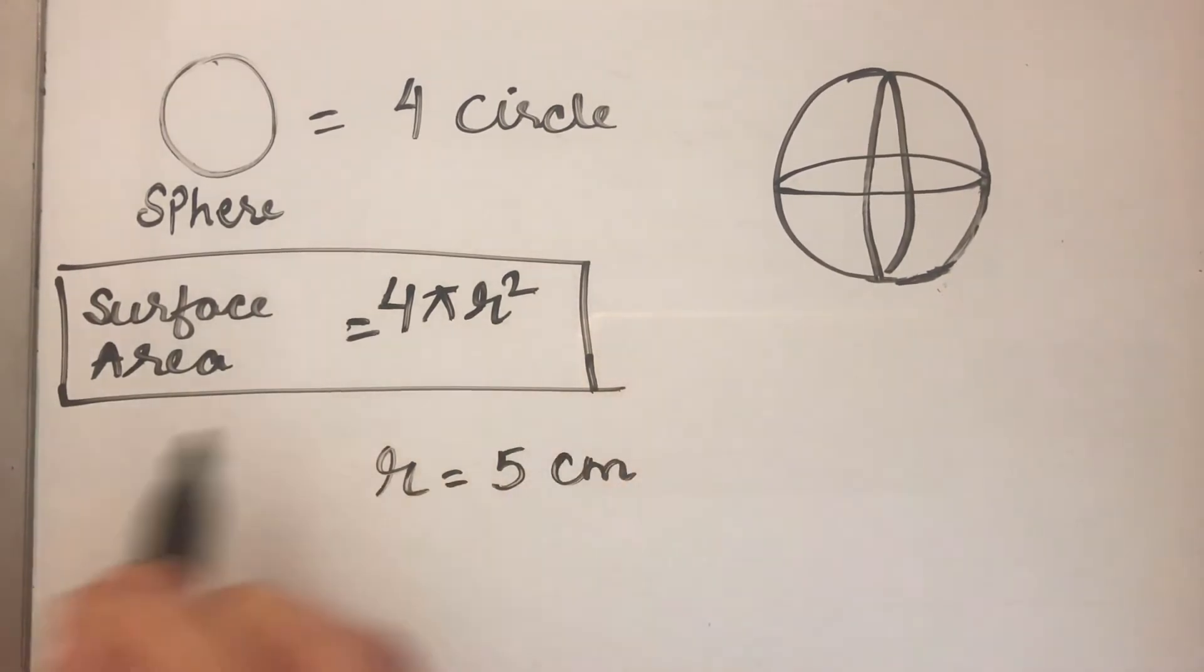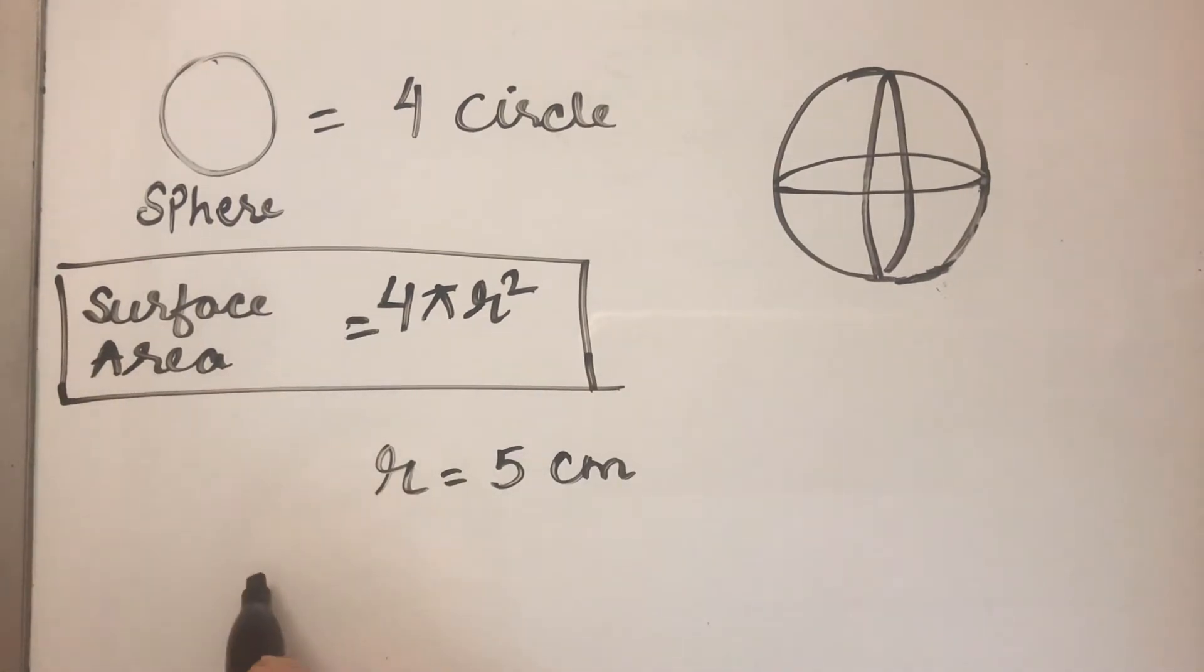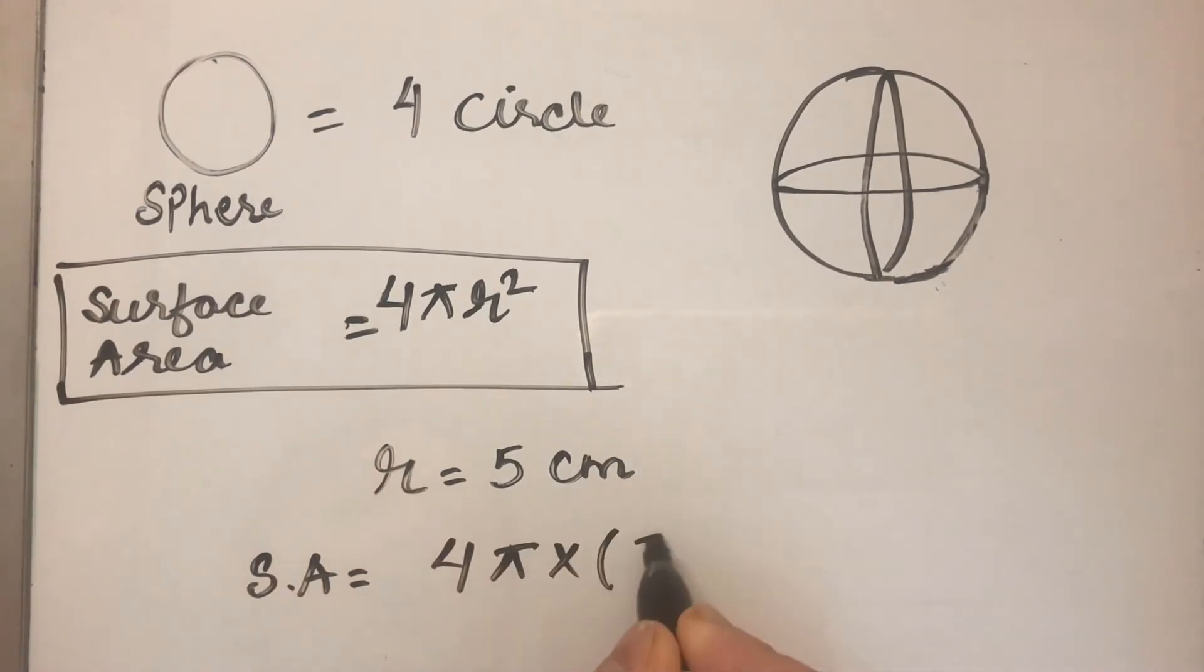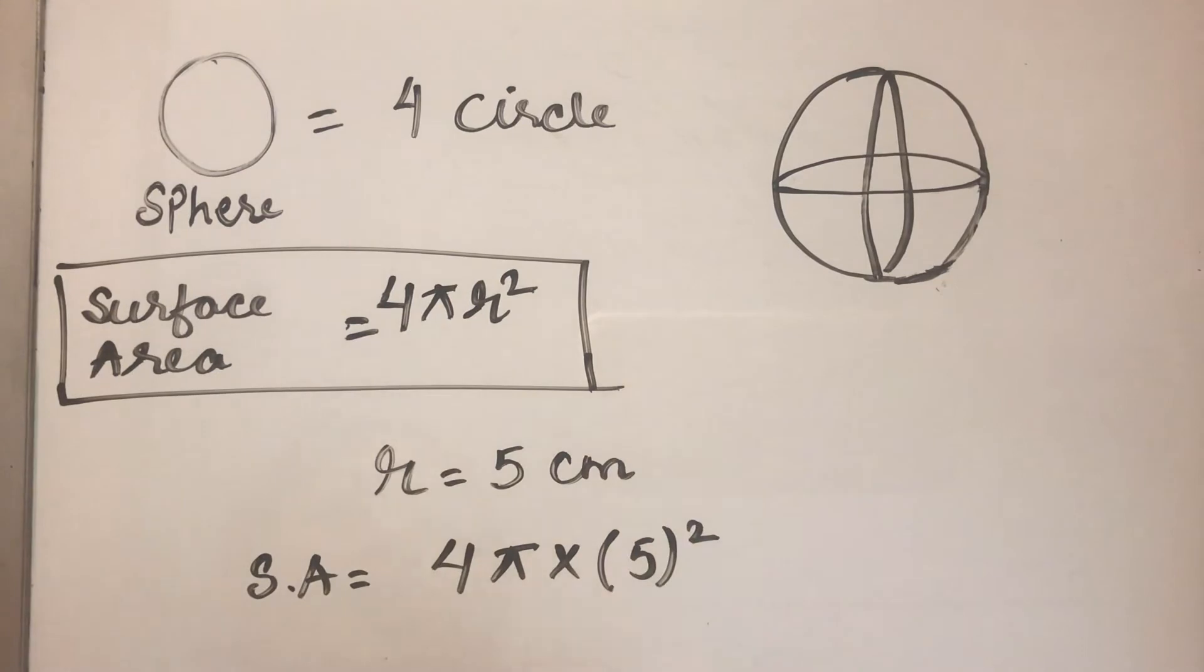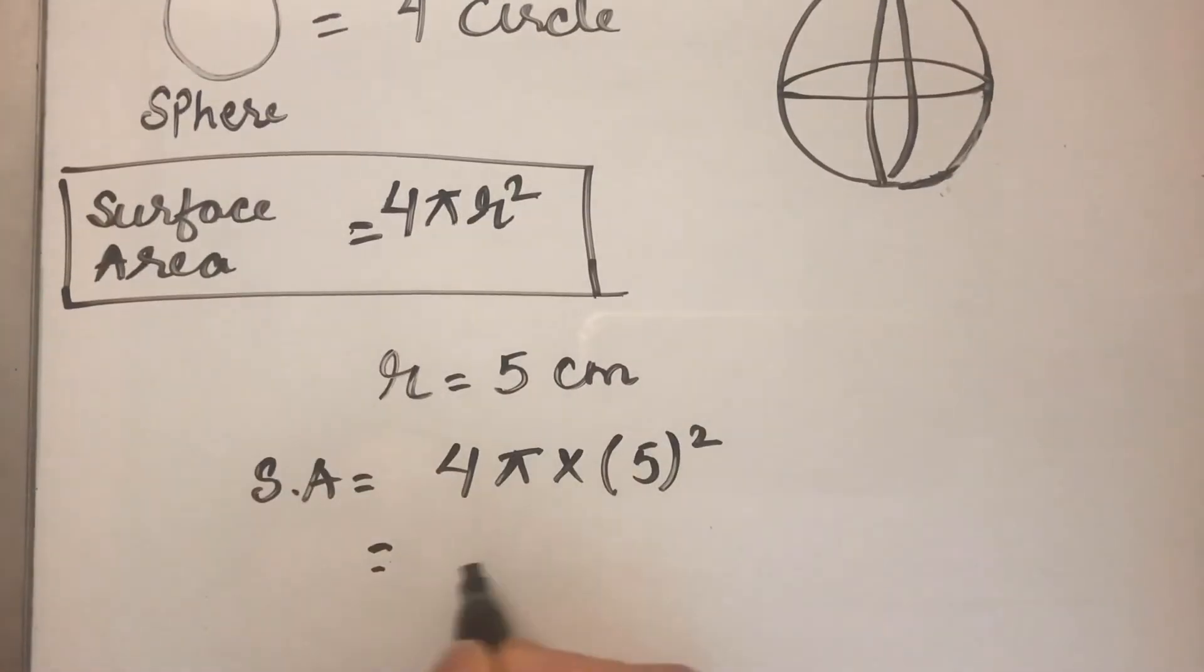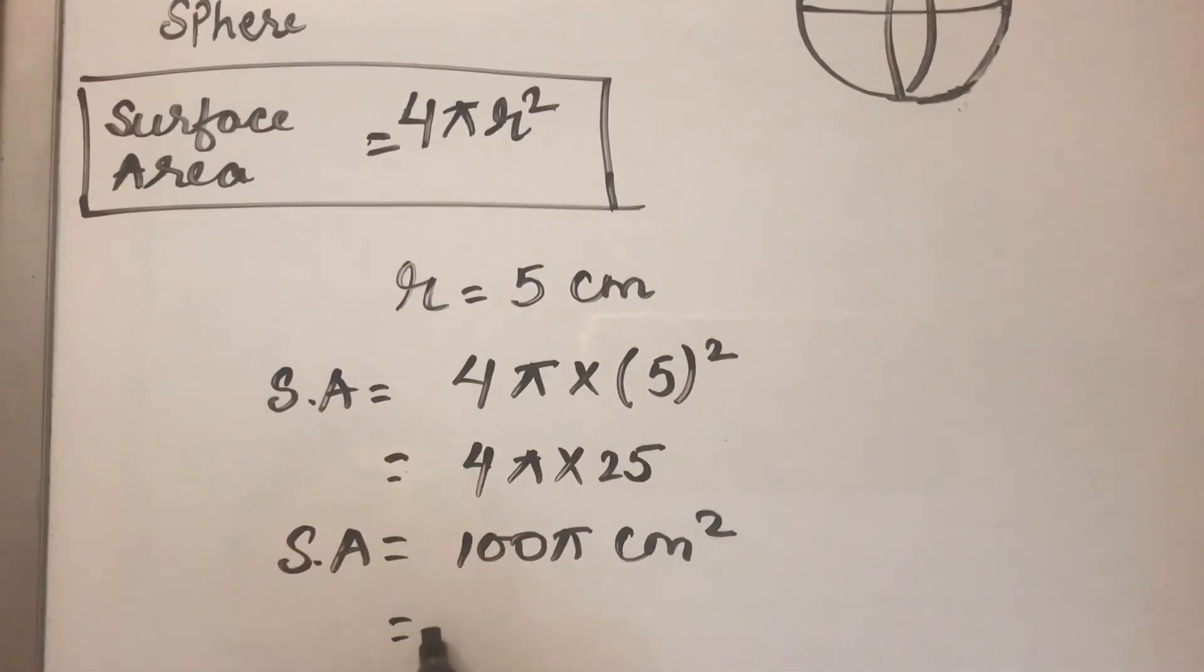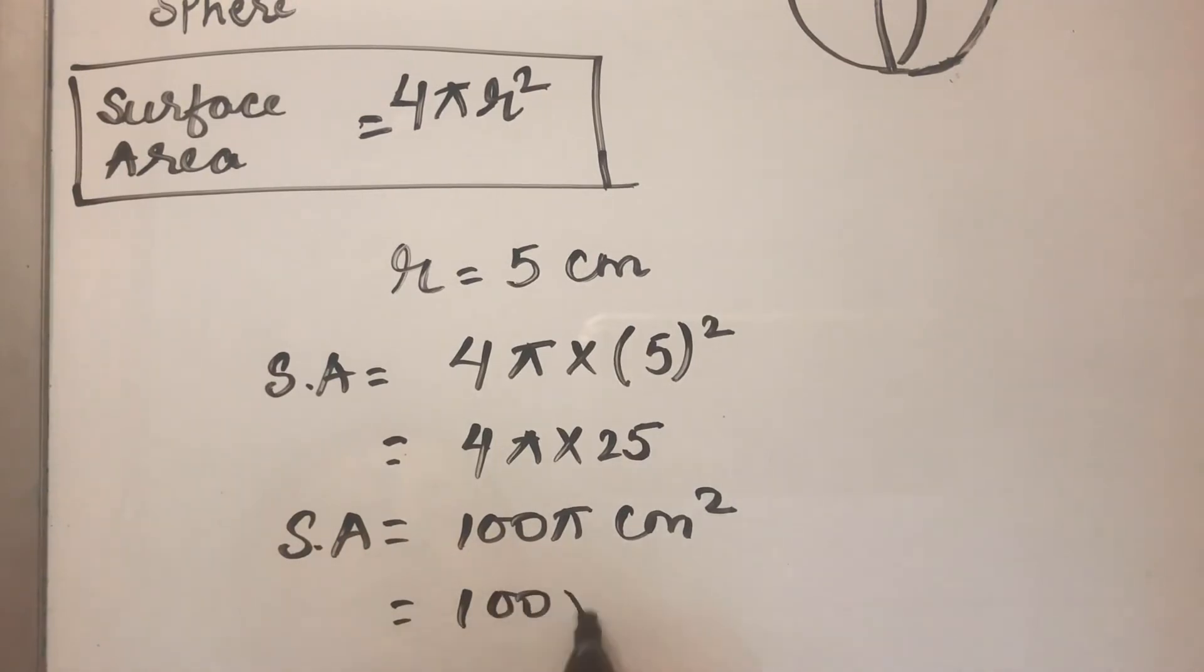We will find the surface area by putting the value in the formula. This will be 4 × π × r². Here r is 5, so this is 5². So 4 × π × 25, which is 100π centimeters squared.